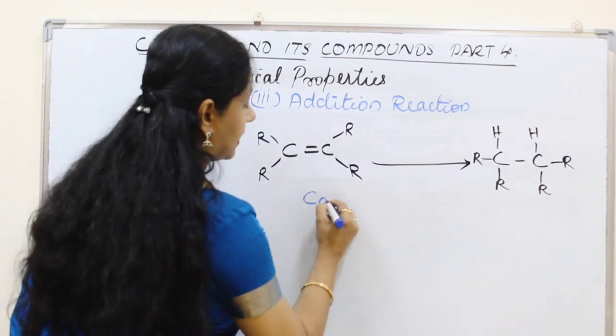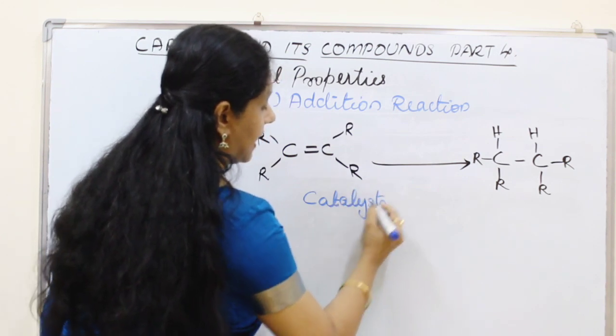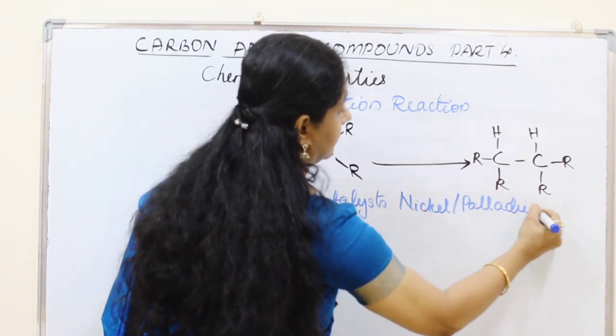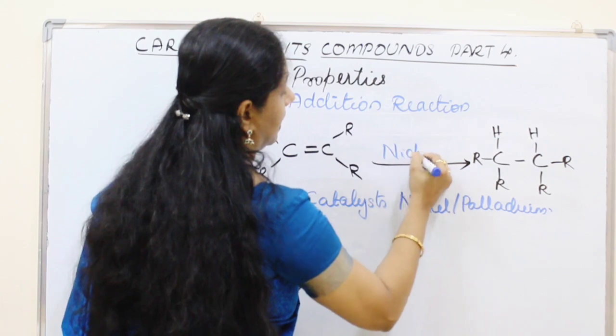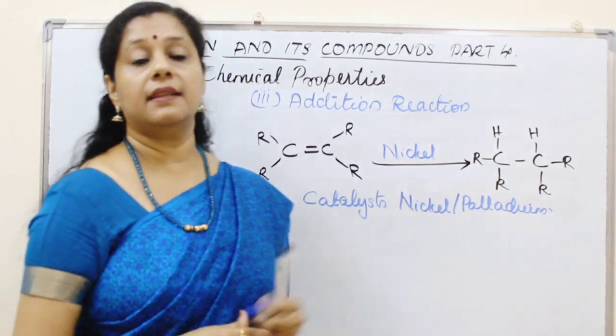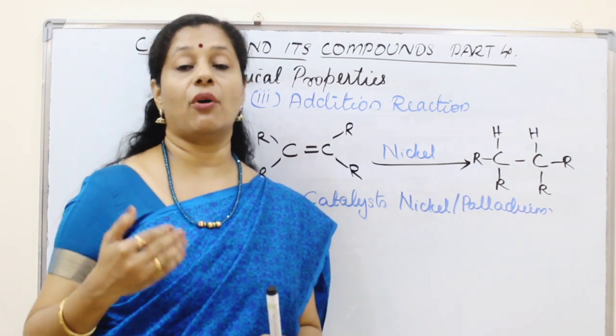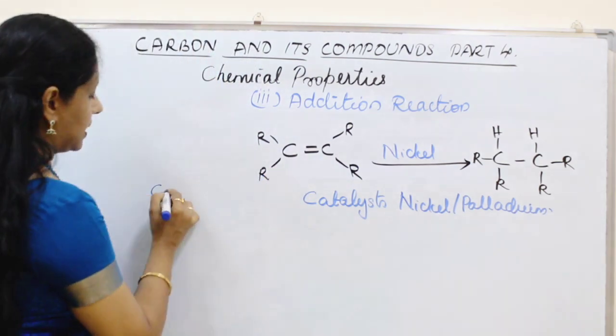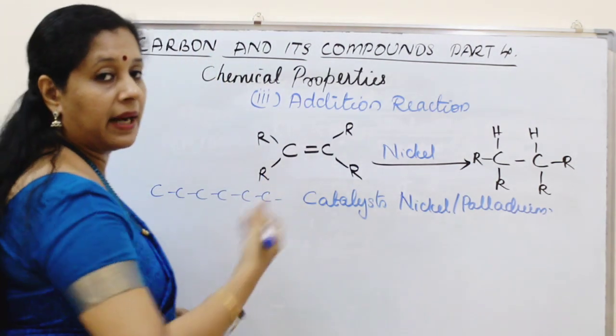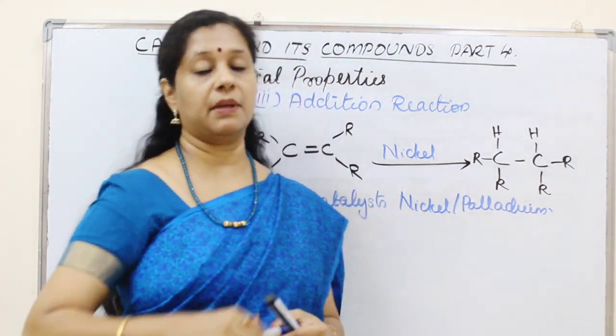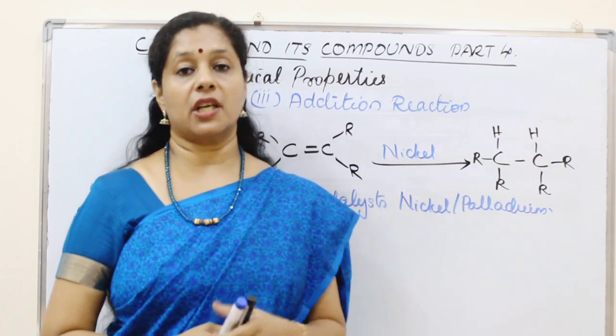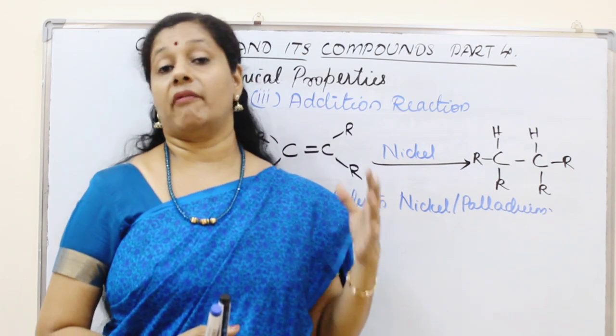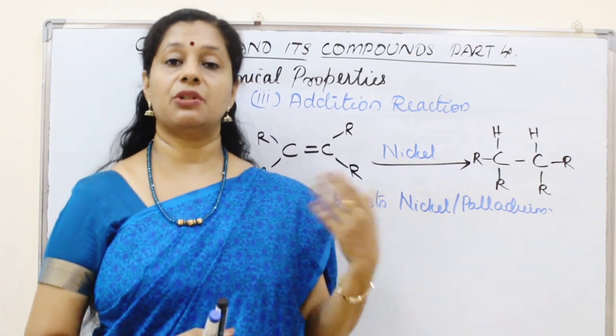But for this reaction to happen, certain catalysts are required. The catalyst can be nickel or palladium. So here using nickel, we are hydrogenating this. Usually this reaction is happening during hydrogenation of vegetable oils. You know, vegetable oils are unsaturated. They have long chains of carbons. For example, some of them have up to 18 and 20 long carbon chains. So these long chains of unsaturated carbon chains can be made into saturated. Then we can make the vegetable ghee or vanaspati. So hydrogenation of vegetable oil to get vanaspati.